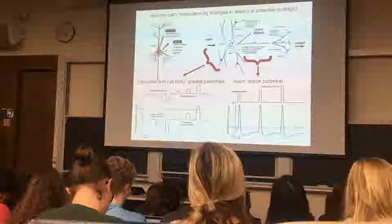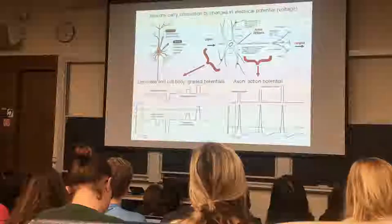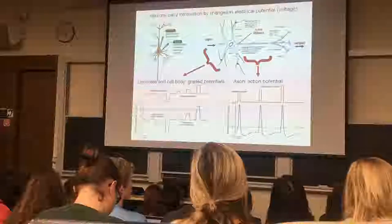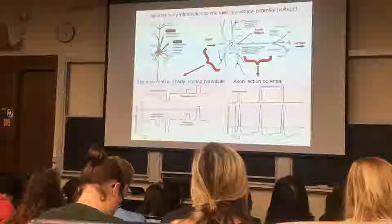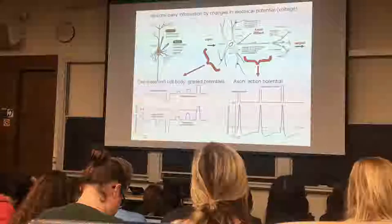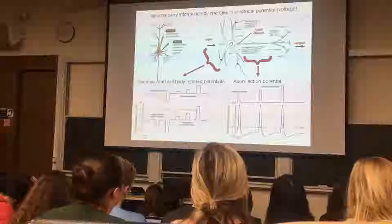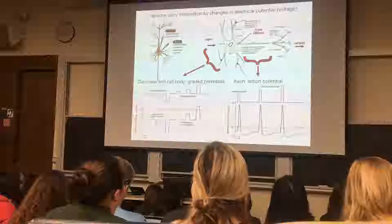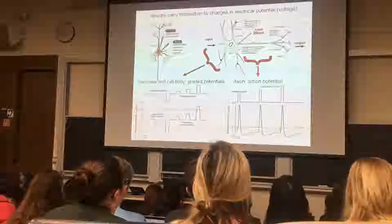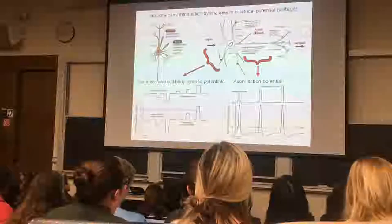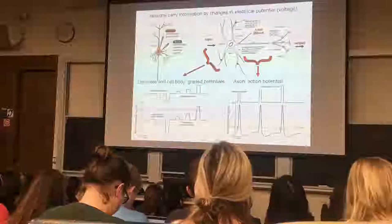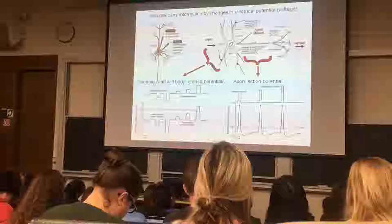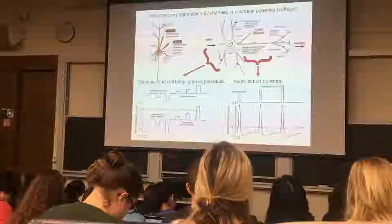If you stimulate the neuron by injecting some kind of a current pulse into a cell and you record the electrical potential at the axon, every time you stimulate, no matter how strong the stimulus is, you get a response that's more or less the same. It's traveling along the axon. This is referred to as the action potential. It's not a graded potential. It's not proportional to the size of the stimulus, but it's relatively constant.